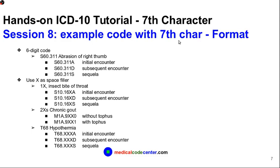The 7th character must always be in the 7th position. If a code has 6 digits, you just add the 7th character at the end. For example, S60.311 (ablation of right thumb): for initial encounter, add A at the end; for subsequent encounter, add D; and for sequela, add S.